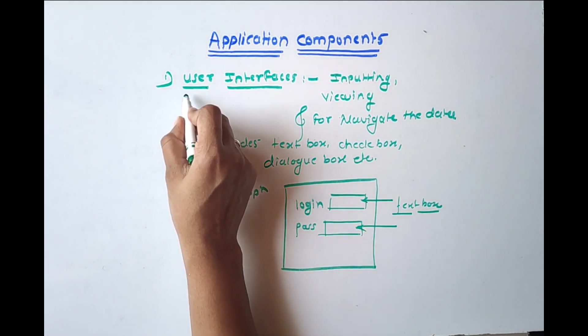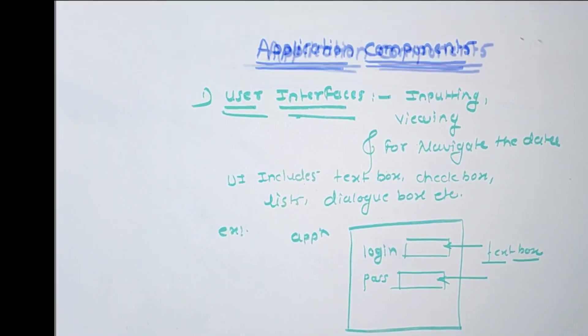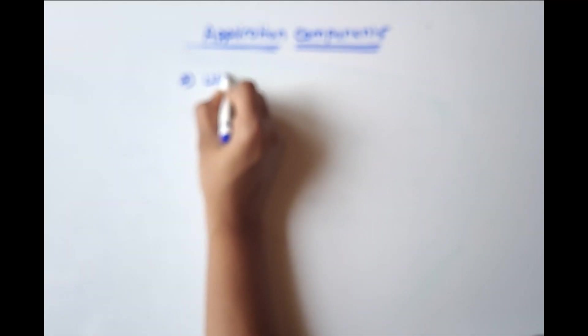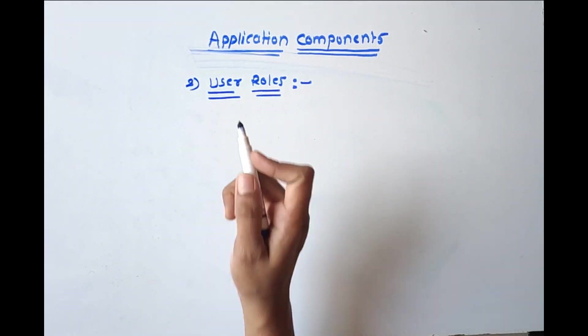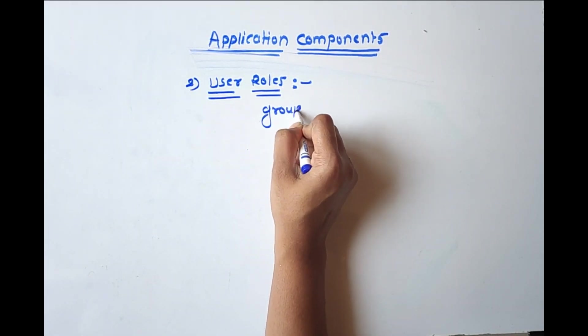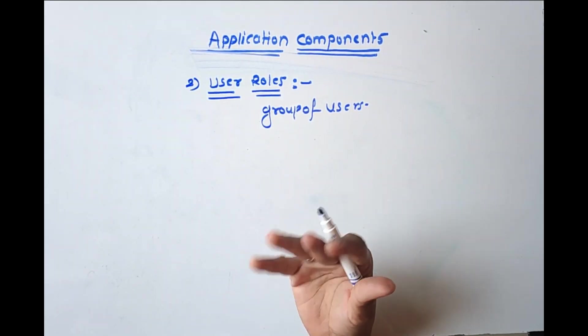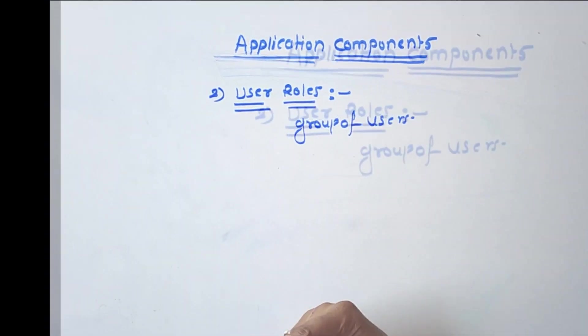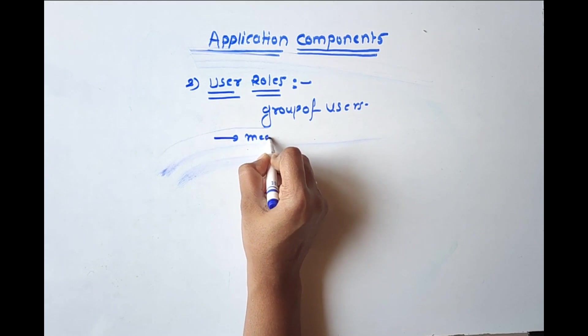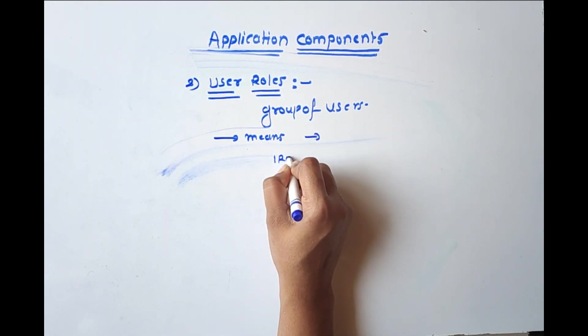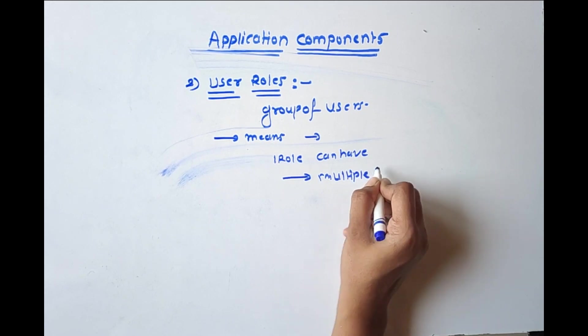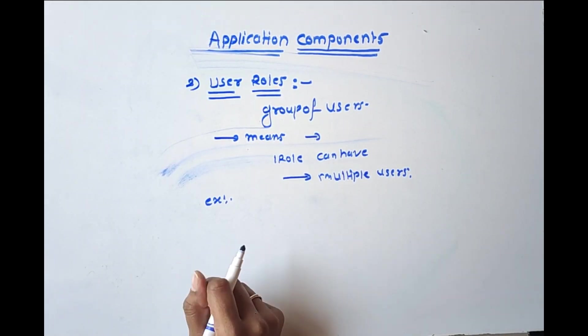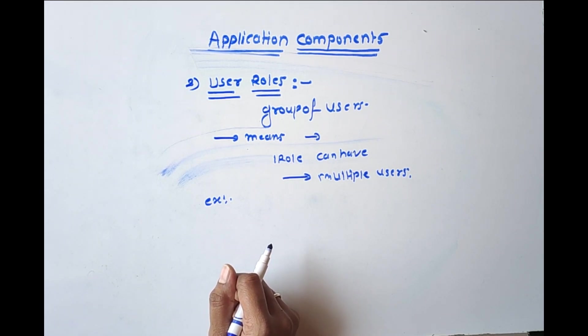Now second one is user roles. Roles denote group of users performing similar tasks and having similar level of permissions. Means one role can have multiple users. For example, any company role can be employee, project manager, HR officer and etc.